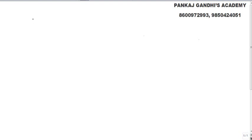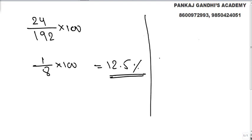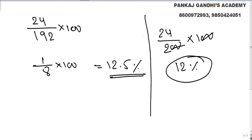For example, we are supposed to calculate 24 upon 192 into 100, and we get the answer as 12.5 percent. But if someone does not know how to solve it and does it by approximation, they might get 12 percent. The actual answer is 12.5, so to get the actual answer, this answer should be increased.